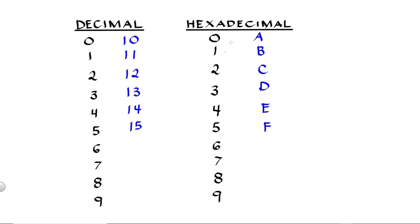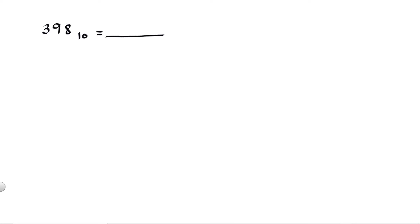But then there are the letters A, B, C, D, E, and F in place of the decimal numbers 10 to 15. 10 corresponds to A, 11 to B, 12 to C, 13 to D, 14 to E, and 15 corresponds to letter F.